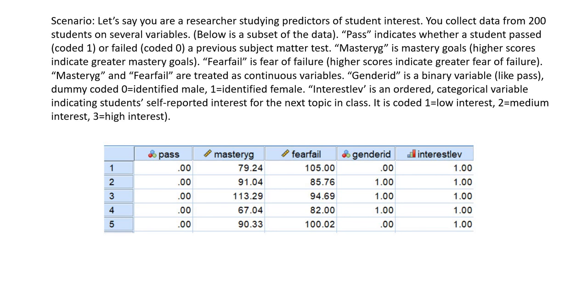And the interest variable, which is our ordered categorical variable — basically our dependent variable in our models — is coded 1 for low interest, 2 for medium interest, and 3 for high interest.